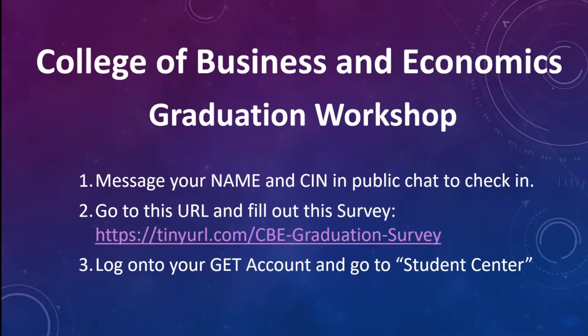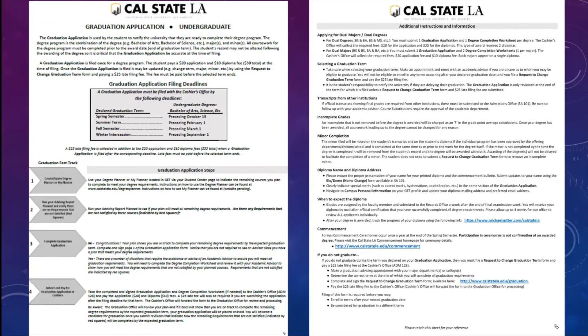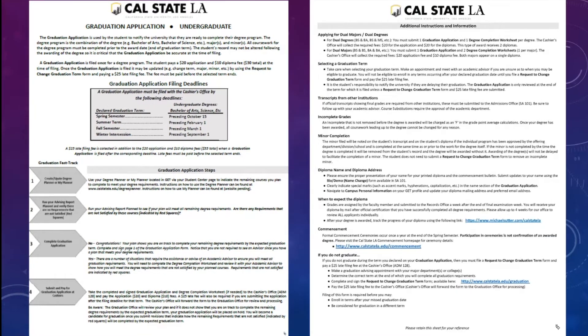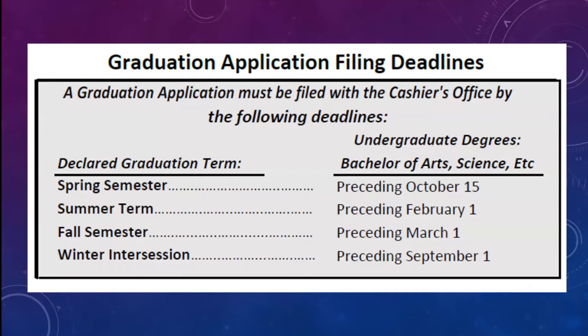Let's pop into the next slide. When you download the application form, this is where you'll find these instructions. Graduation application filing deadlines — every single semester has its own deadline, and you have to make sure you submit your graduation application before that deadline. For example, if all your classes are going to be done in the spring semester, you want to submit this application before October 15th.